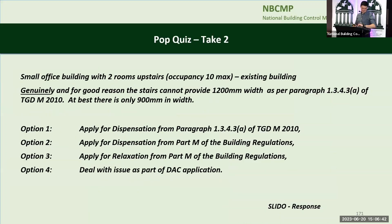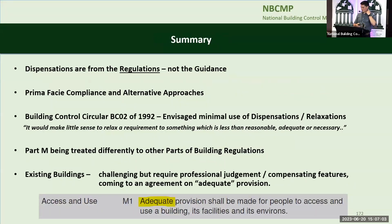Pop quiz take two. Small office building, two rooms upstairs — genuinely and for good reason the stairs cannot provide 1,200mm width as per paragraph 1343A of TGDM; we only have 900mm. I think you all know the answer now — we can handle it through the DAC process. To summarise: dispensations are from the requirements of the regulations, not from the guidance. The technical guidance documents provide a route of prima facie compliance with the building regulations, but there are alternative approaches — you just have to tell us what you're doing.